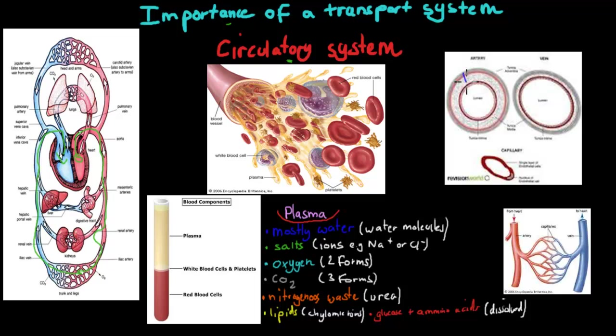The first one is the arteries. They have very thick muscular walls because they're closest to the heart where blood is being pumped, and that means they have to withstand high pressures. They have thick muscular walls so they don't rupture.